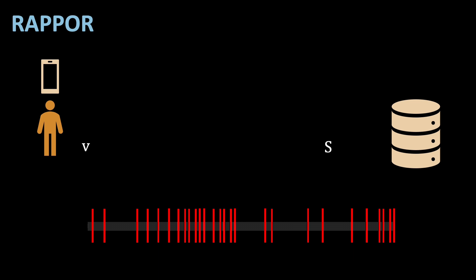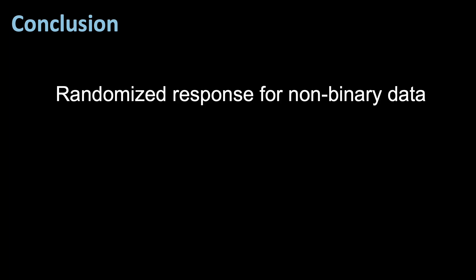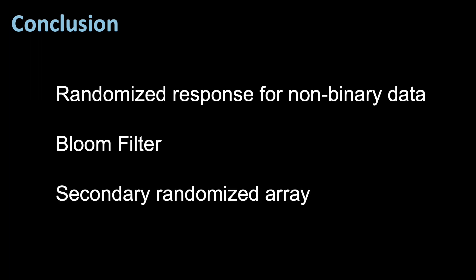To summarize this video, rapport is a way to implement randomized response for non-binary data. We have seen how an arbitrary number like 68 has been mapped to a randomized array, first B, then B prime, and finally S, which is then sent to the data curator. The mapping happens via bloom filters, which are then randomly changed. The original bloom filter is being randomized twice in order to preserve privacy.